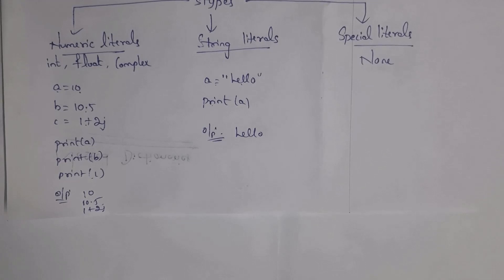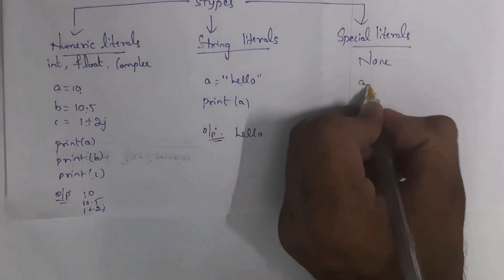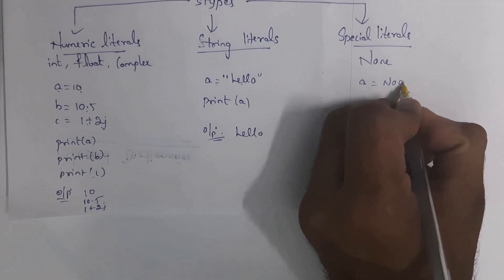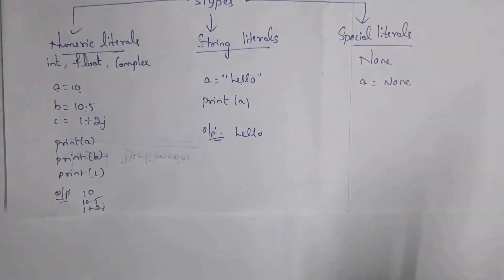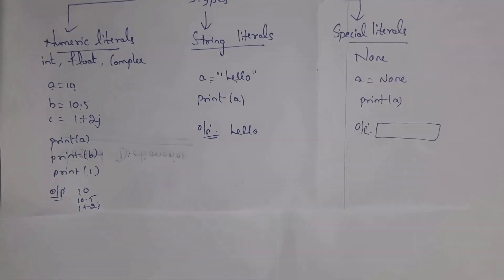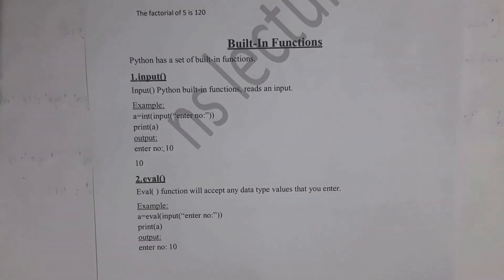Next, special literals. Special literals contain the None type. For example, a = None — None means nothing. If you don't want to assign any value, write None. When you print(a) you get no output, because None means nothing and will not display any value.